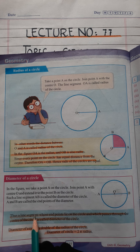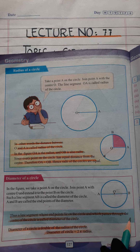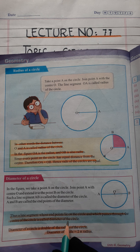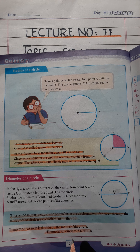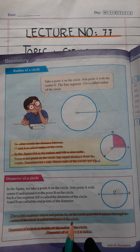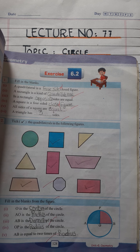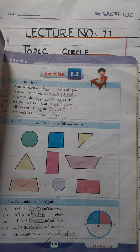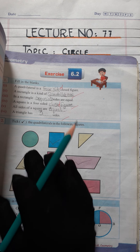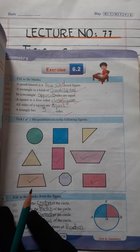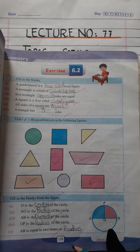These are simple definitions. You people underline these important points for yourself — they are important for objective point of view. Now we move toward your exercise homework. This is exercise 6.2, question number 3, book page 128.